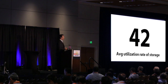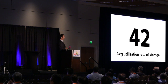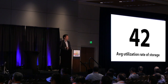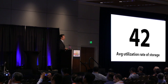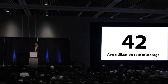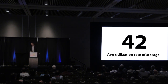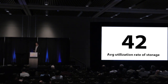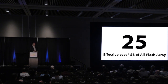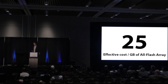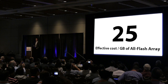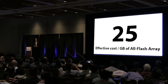This problem is compounded by another number: the average utilization rate of a storage system in a modern enterprise — 42%. Customers that are buying all this capacity at $10 and change a gigabyte are actually only effectively using about 42% of it. So the effective cost per gigabyte for that array is $25 per gig, based on those low utilization rates.